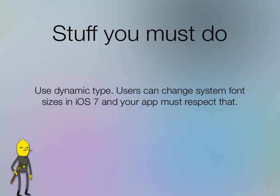Another thing you absolutely must pay attention to is dynamic type — totally new to iOS. Apple typically hasn't provided much in the way of customization, and all of a sudden they have, so you need to do it. In iOS 7, the user can adjust the text size they want apps to adopt, and you can define different parts of your text that respond to that. You absolutely must implement this if your app has any text, because otherwise users will think your app feels weird.